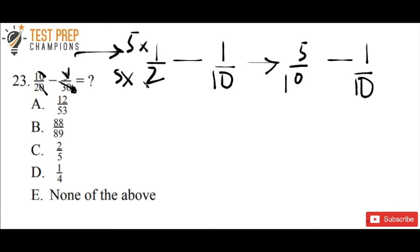If you multiply the bottom number by 5, you've got to do it to the top number as well. That's why I multiplied the 1 by 5 also. So we're now left with 5 over 10 minus 1 over 10, and that equals 4 over 10.